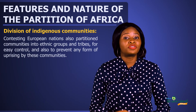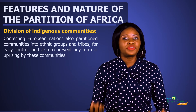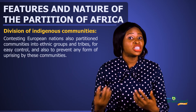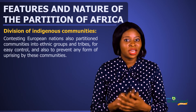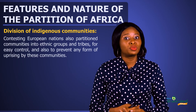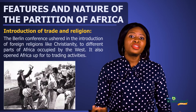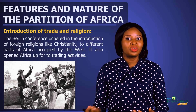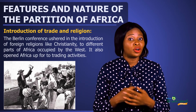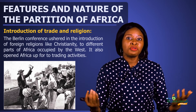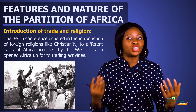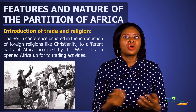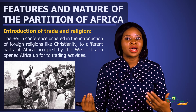Another feature of the Berlin Conference was the division of indigenous communities. In order to avoid conflicts and for easy control, African territories were divided into ethnic groups and tribes. Another feature was the introduction of trade and religion. By reason of the Berlin Conference, foreign religions such as Christianity were introduced into different parts of Africa, and the conference also opened up Africa for trade.